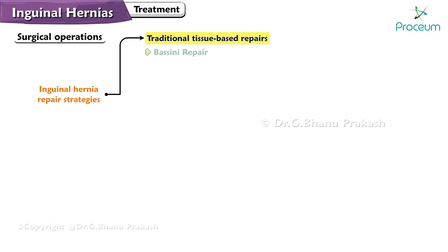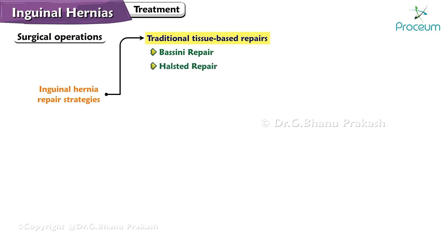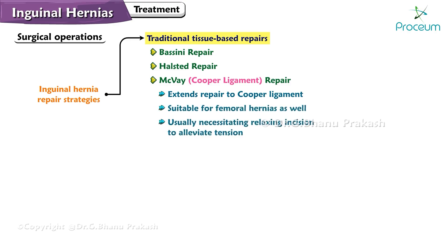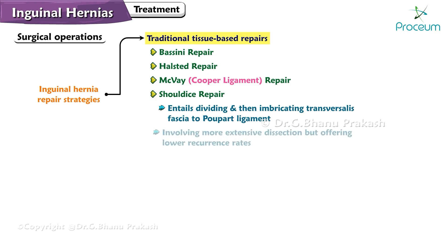Traditional tissue-based repairs include: the Bassini repair, which involves suturing the conjoined tendon to the pubic ligament maintaining the spermatic cord's anatomical position; the Halsted repair, similar to Bassini but positioning the external oblique beneath the spermatic cord; the McVay Cooper ligament repair, which extends the repair to the Cooper ligament and is suitable for femoral hernias, usually necessitating a relaxing incision to alleviate tension; and the Shouldice repair, which entails dividing and then imbricating the transversalis fascia to the pubic ligament, involving more extensive dissection but offering lower recurrence rates.